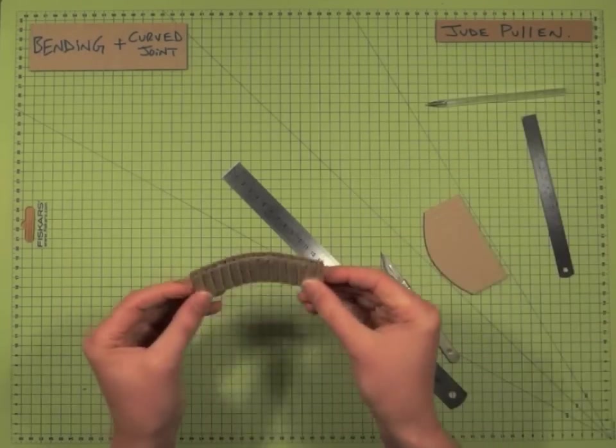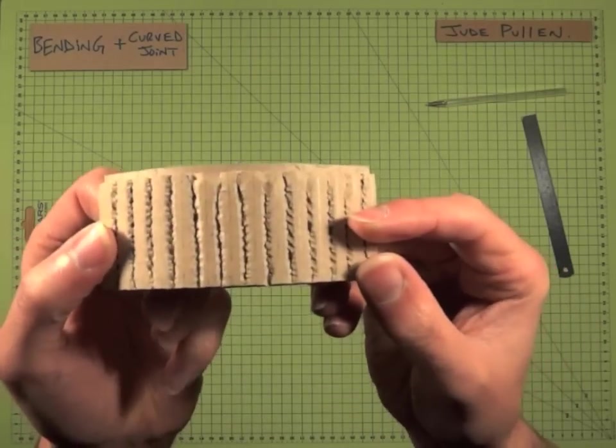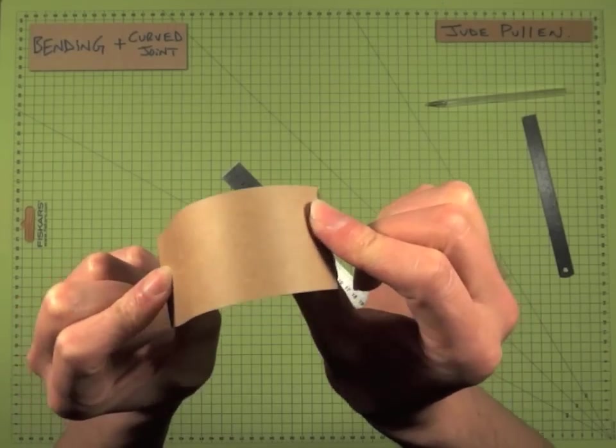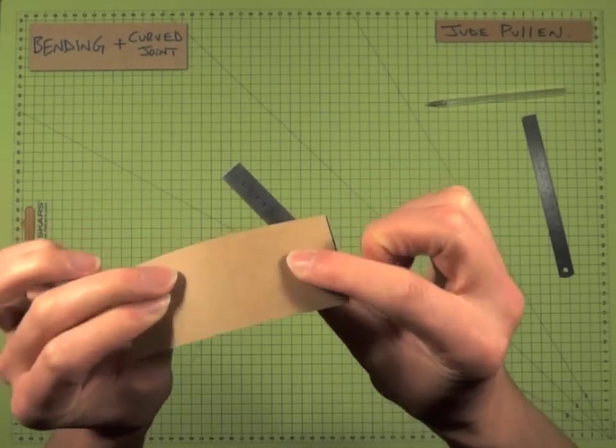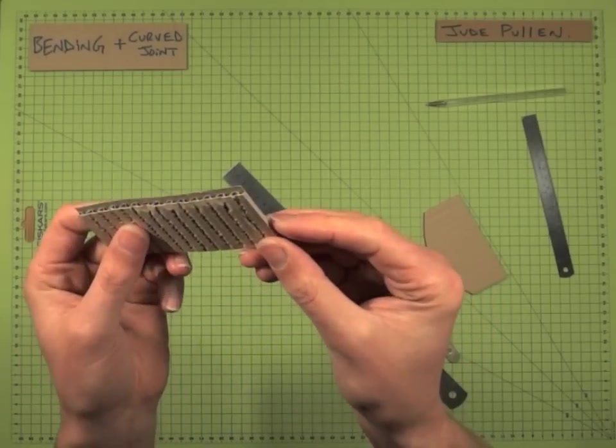So what you'll see now is that we've got a nice bendy bit of card. Although it's quite damaged here, it's quite clean on that side, and so we've got a nice smooth transition. You can make the folds closer than that if you've got a really tight radius, but generally it's fine as it is.